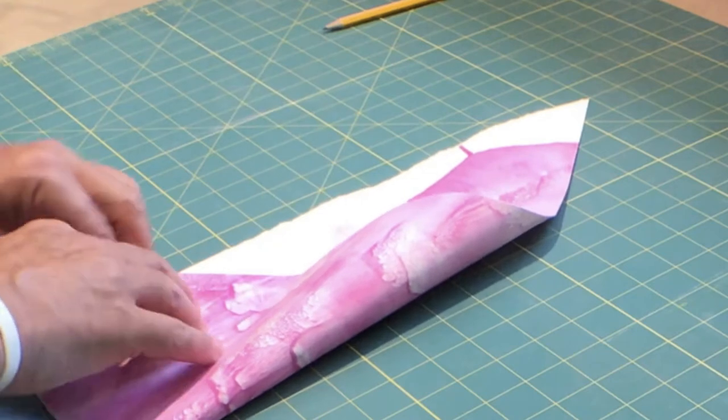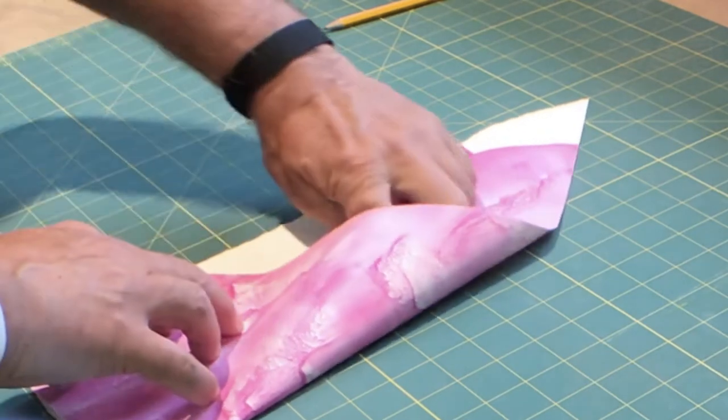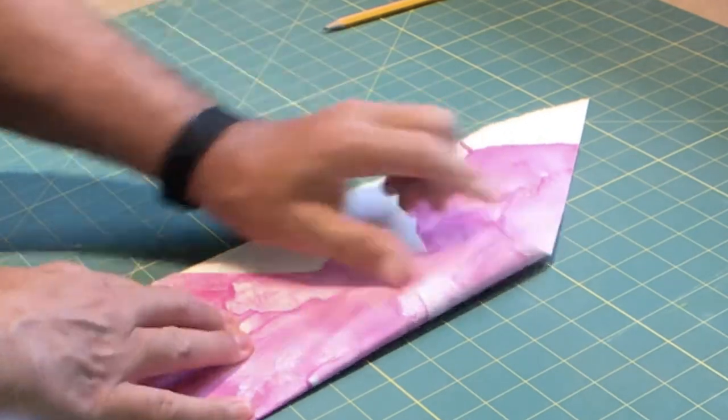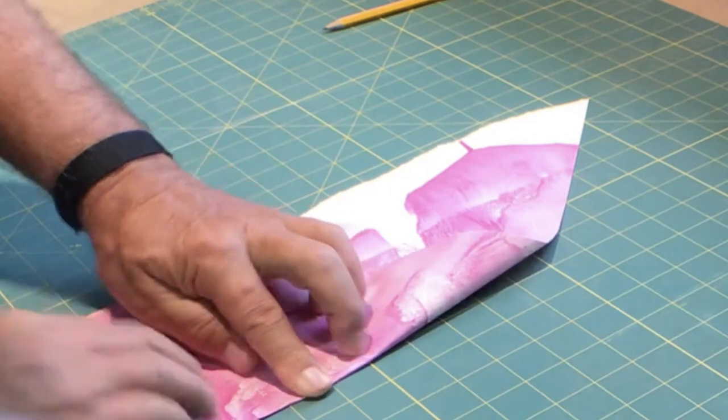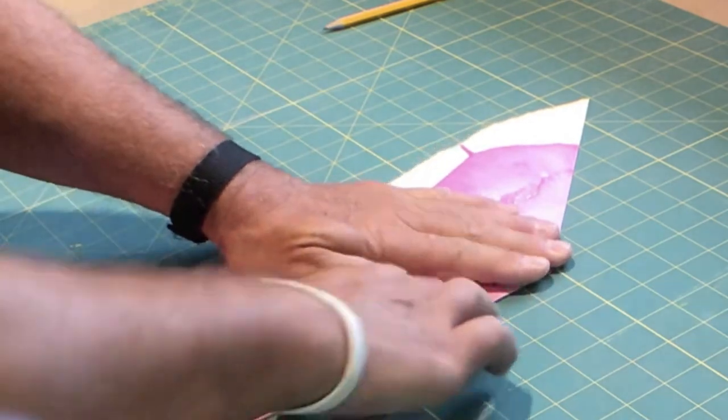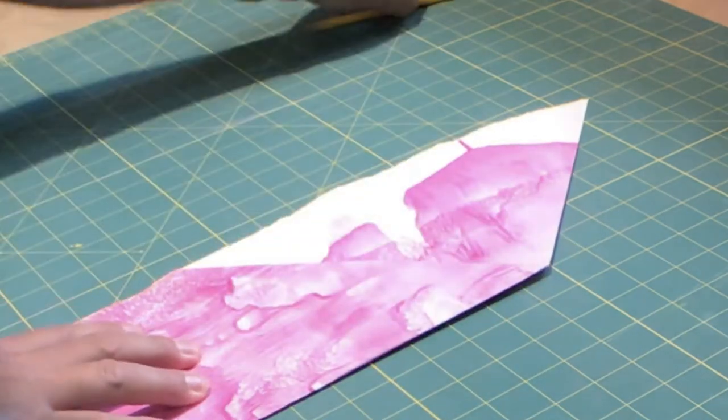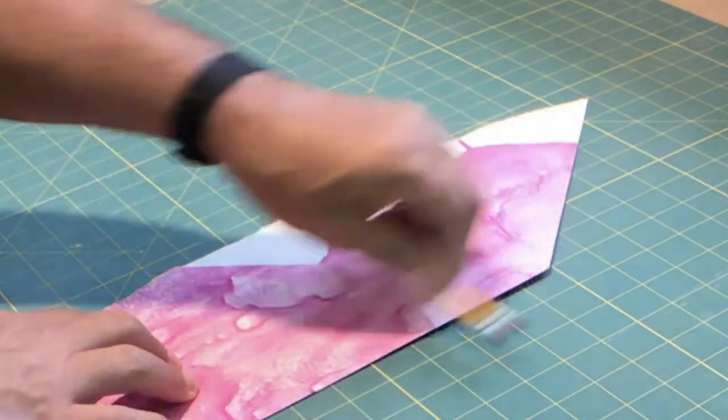All right. The next thing is I'm going to grab from the right hand side and again, fold it over so it is flush with the left hand side. And wherever that folds is where I'm going to just let it fold. And I'm going to crease it again with the pencil.